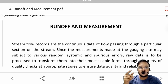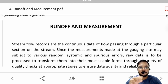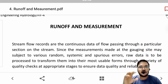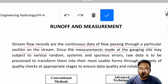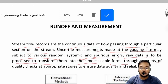Our interest comes to the measurement of how much runoff is taking place on a particular basin or catchment, as this helps us determine how much water can be stored and used. Stream flow records are the continuous data of flow passing through a particular section on the stream. Since measurements at the gauging site may be subject to various random, systemic, and spurious errors, raw data must be processed through quality checks to ensure data quality and reliability.